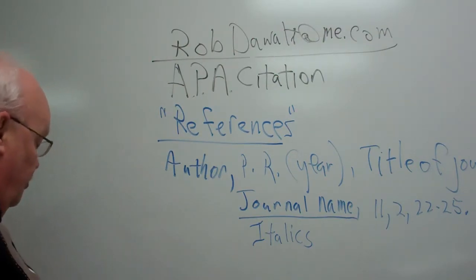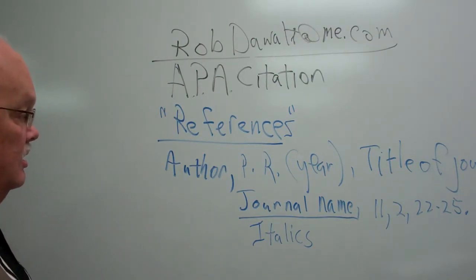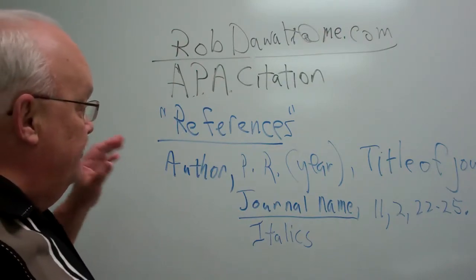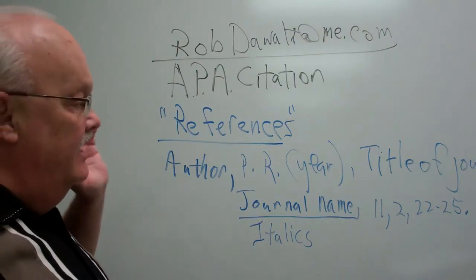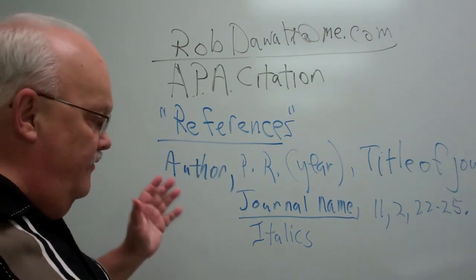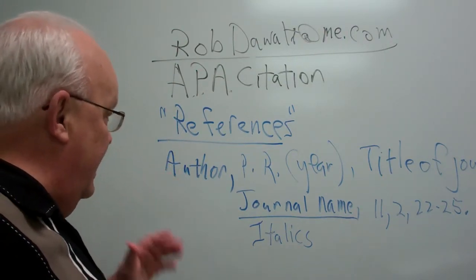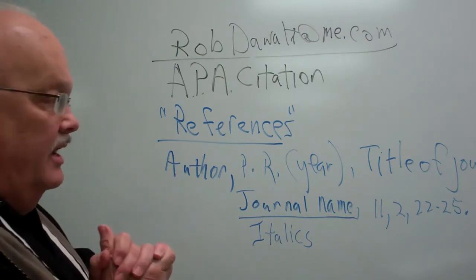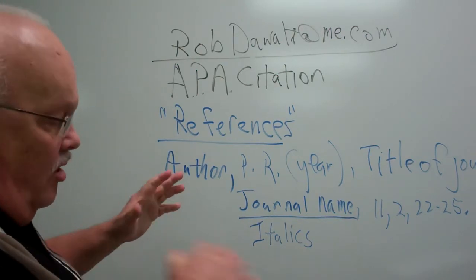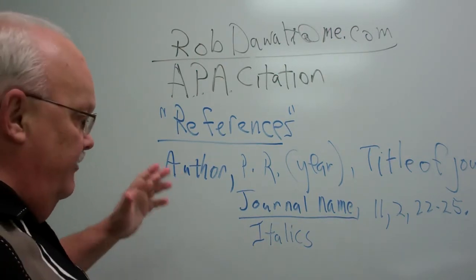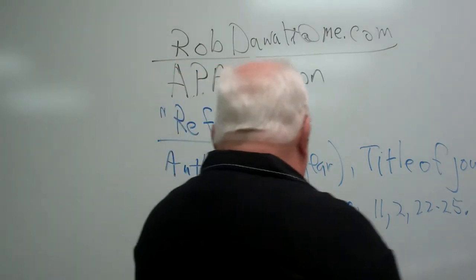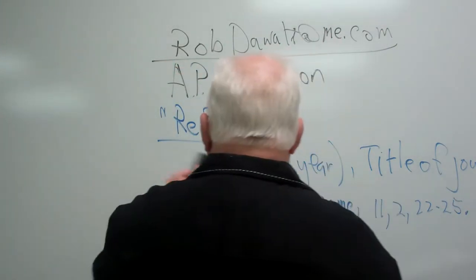That's what we're talking about when the references aren't done right. If you're using a journal article, you want to always cite it correctly. Very few people do that — a lot of people get in a hurry, put part of it in there, and leave part of it out.